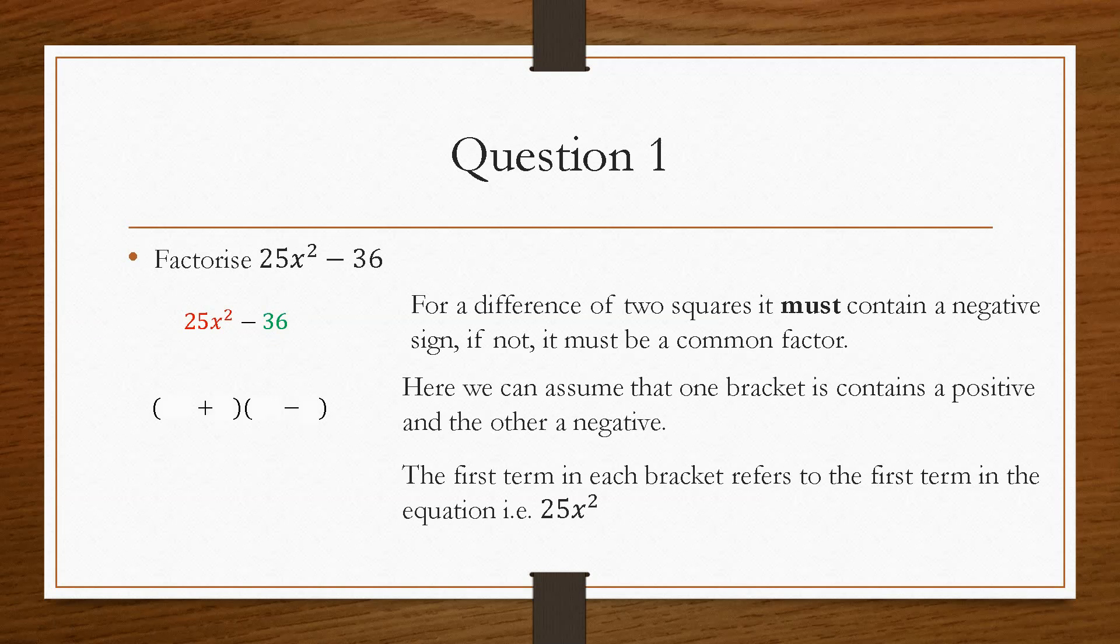Now the first term in each bracket will refer to the first term in the equation, i.e. the 25x squared. We'll refer to this term and this term. And the 36 will refer to this term and that term.